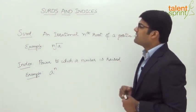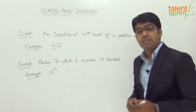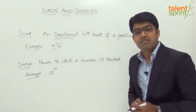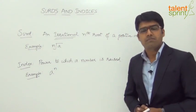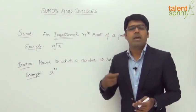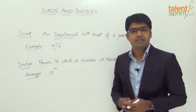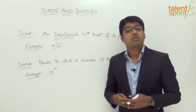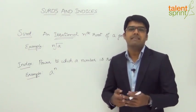A surd is an irrational nth root of a positive integer. I would draw your attention to the term 'irrational' — it is an irrational nth root of a positive integer. When we are unable to simplify a number to remove its square root, cube root, and so on, then it results in a surd.